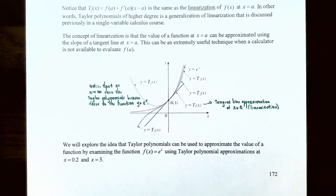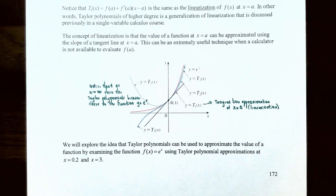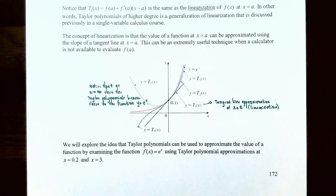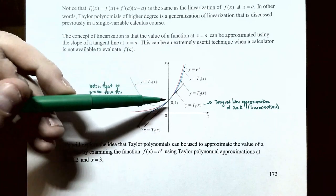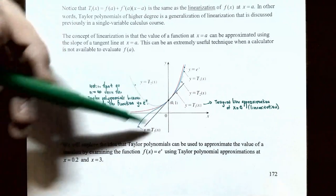The concept of linearization was that the value of the function at x equals a can be approximated using the slope of the tangent line at x equals a, which is a linear function. For example, if you have y equals e^x and want to approximate it using a linear function, you find the slope of the tangent line at x equals zero. The derivative of e^x is e^x; evaluated at zero that gives e^0 = 1. So the slope is 1, and the function value f(0) = 1 as well, meaning the linearization of e^x is 1 + x.